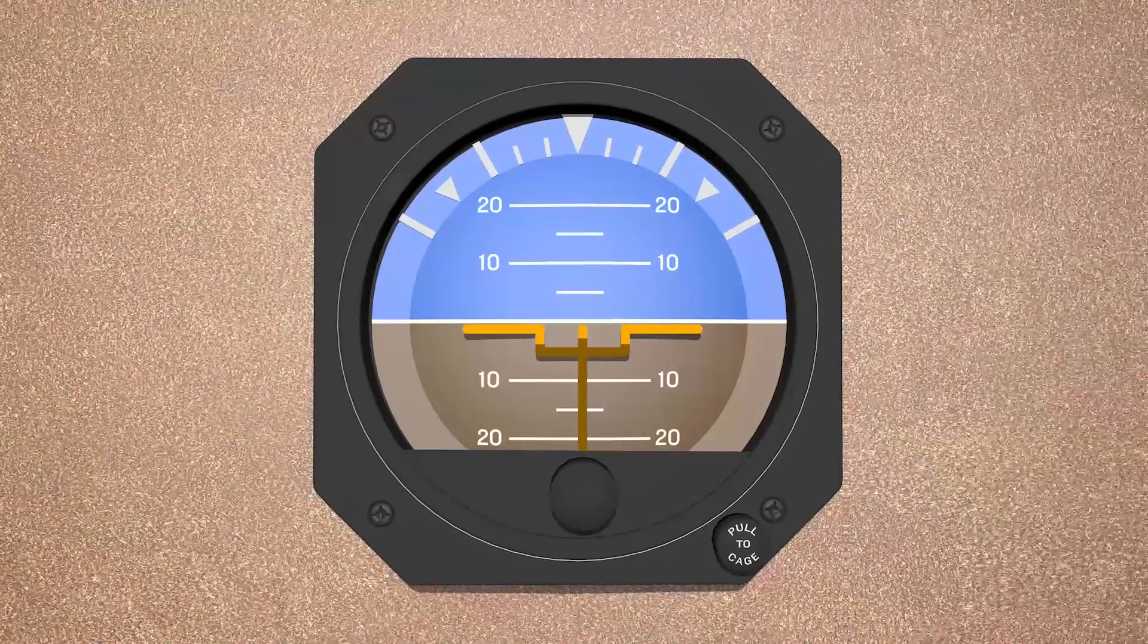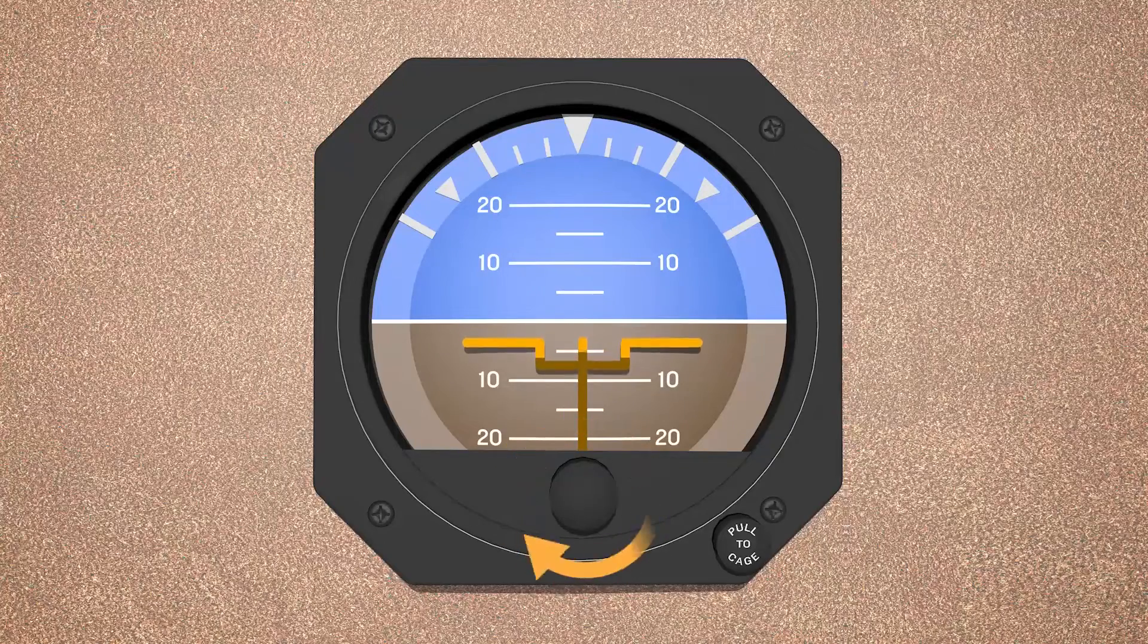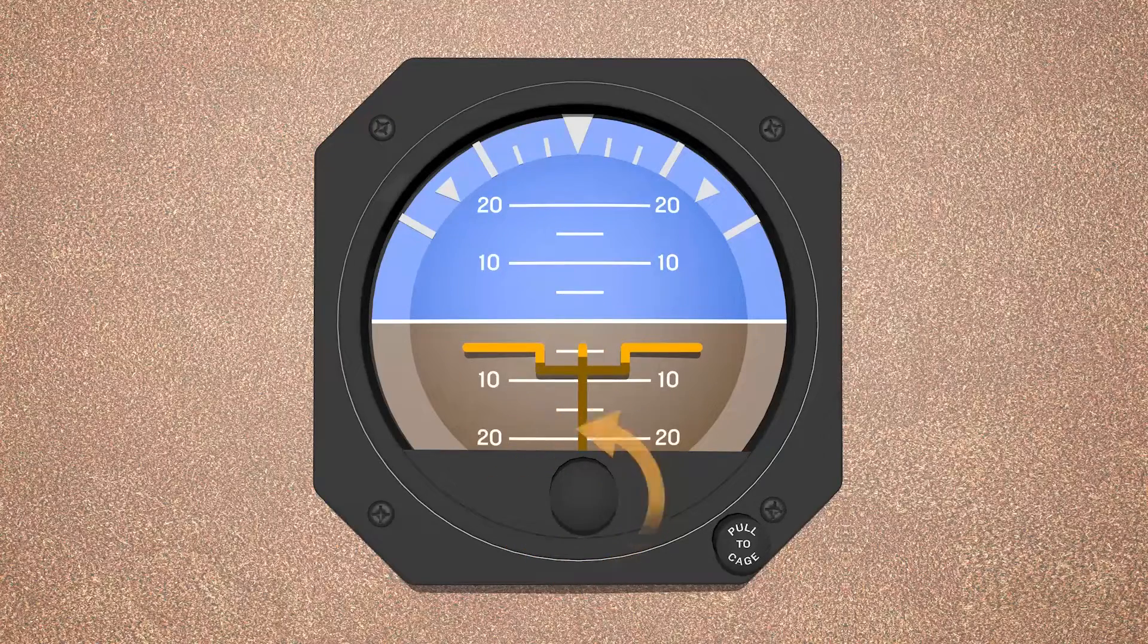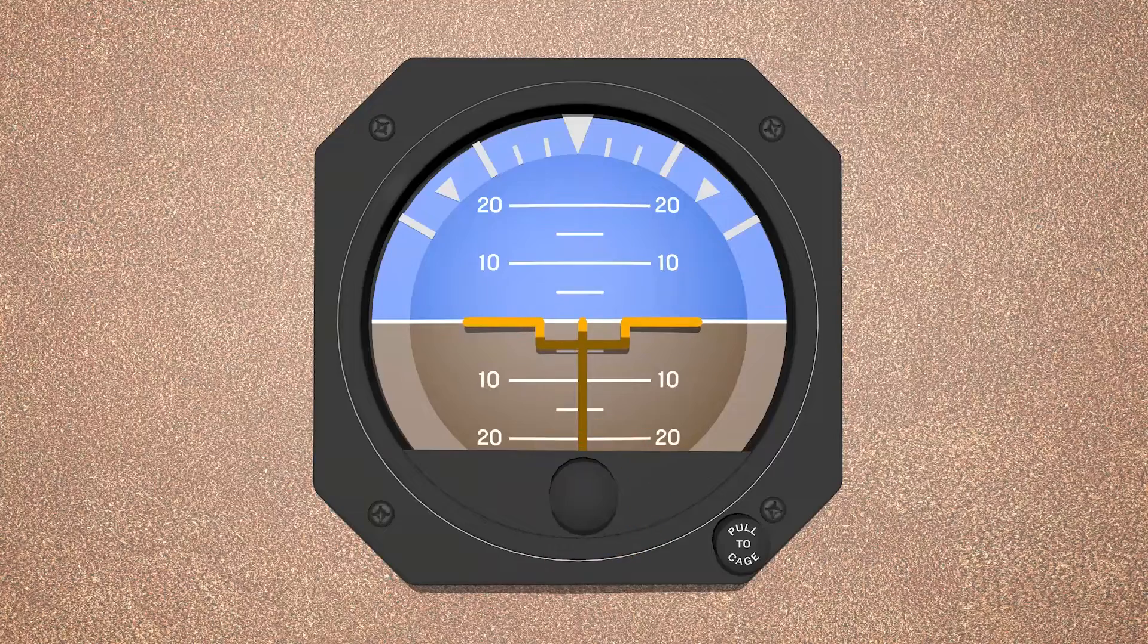This is referred to as parallax. So with these instruments, you need to be able to adjust the height of the aircraft symbol to compensate for your line of sight.